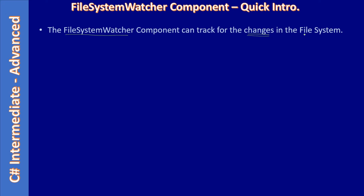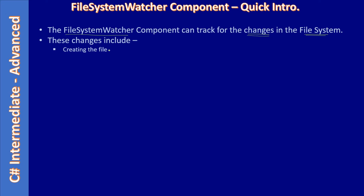The changes include creating a file — meaning a new file is created — and deleting a file. For example, if we take creating a file: the Windows operating system maintains, say, 20,000 files. After a new file is created, there are 20,001 files — that is a change to the file system. Deleting a file is also a change, as is renaming a file.